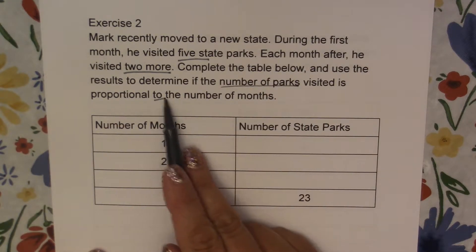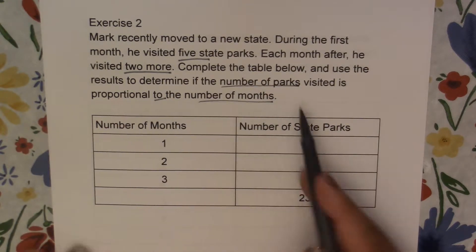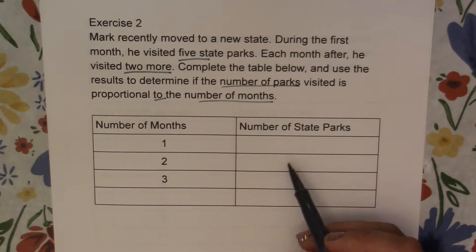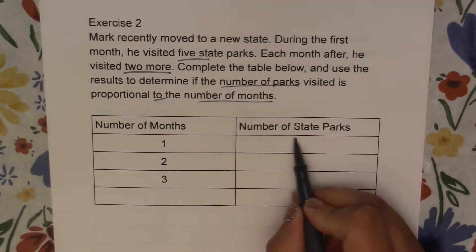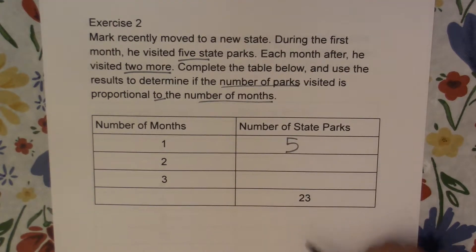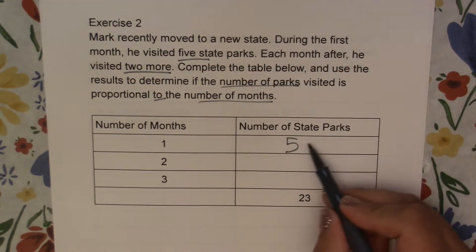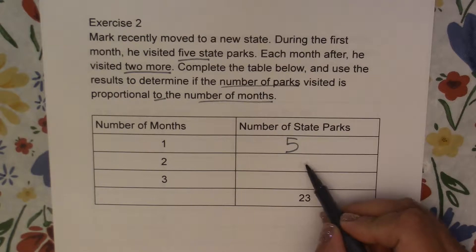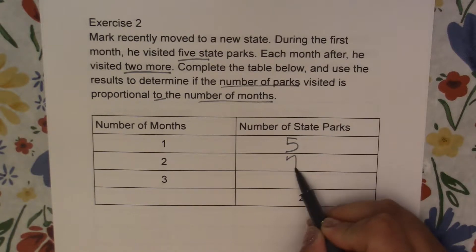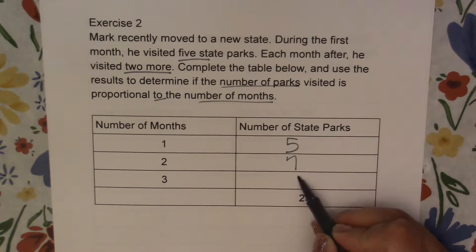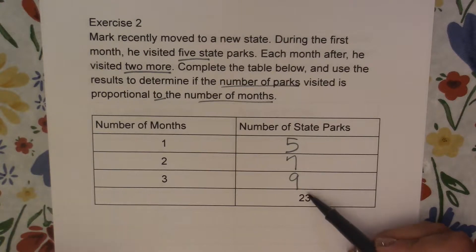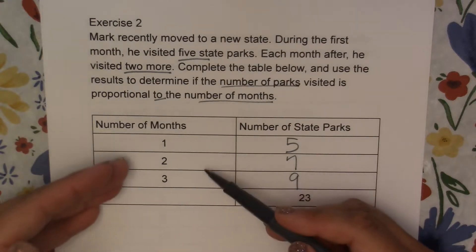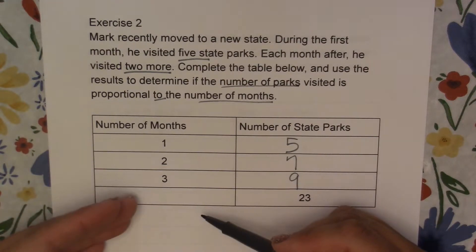We're doing number of parks to number of months. So in our first month he goes to five state parks, and then from there he goes to two more. So he would have a total of seven and then a total of nine. Now notice we've got a big jump here, so it's not like they went one, two, three, four.